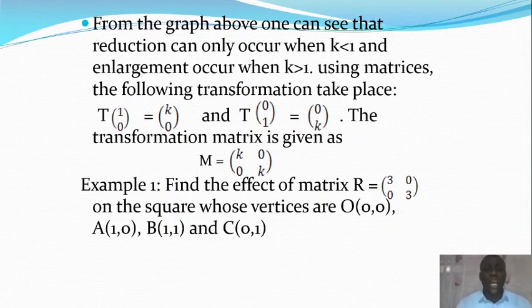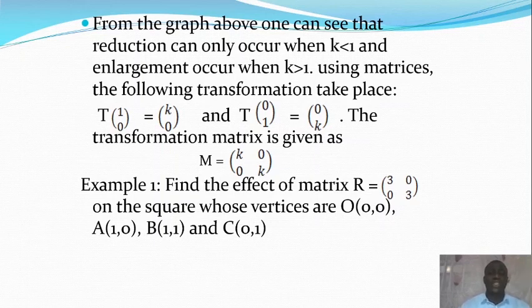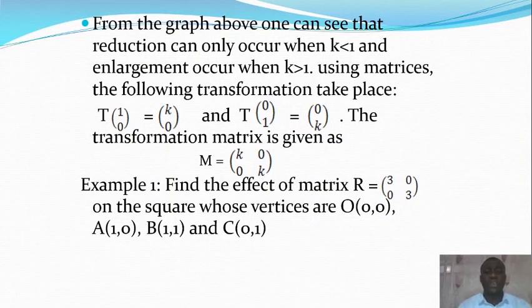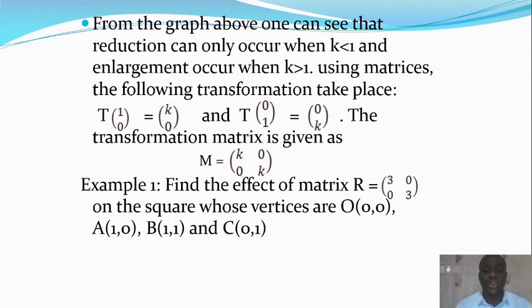Now let's look at this example. Don't expect all exercises to look like this — it might come in different forms, but you should be able to trace it and get your answer. If you look at my transformation matrix, I always use M as my transformation matrix, but questions might come where the examiner might not use M. You should be technical enough to identify which one is the transformation matrix. Example 1 says: find the effect of the matrix R = [[3,0],[0,3]].